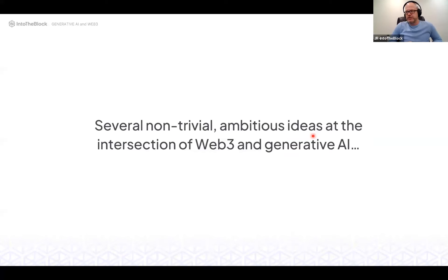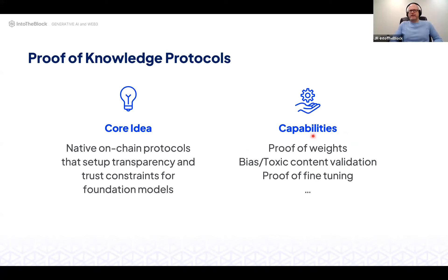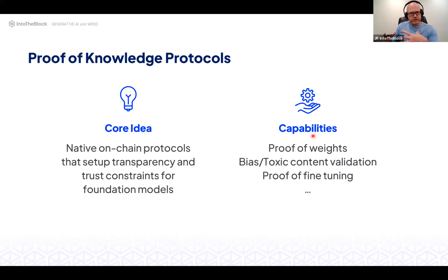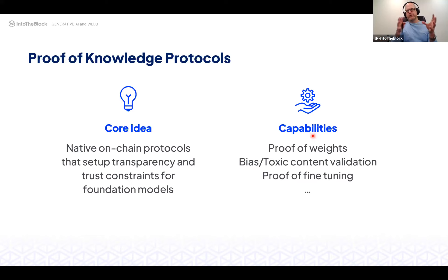One non-trivial idea is what we call a Proof of Knowledge Protocol. There's a real issue in generative AI with the lack of transparency — nobody really knows how GPT-4 works, and many companies have concerns about passing data through those APIs. Having models that protocols approve on-chain — verifying how a model was trained, validated, and what content it does or doesn't contain — is quite interesting.